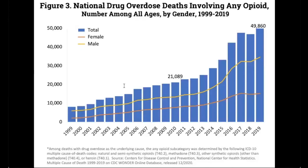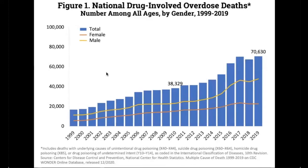This slide shows the cost of addiction in human lives. Just for opioid use in the US, the number of deaths associated with opioid use until 2019 was close to 50,000 people who died from opioid overdose. This next slide shows deaths due to drug overdose more broadly — more than just opioids — and that number goes up to more than 70,000 in 2019.